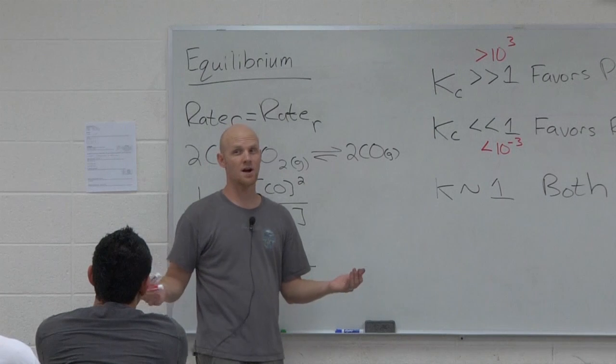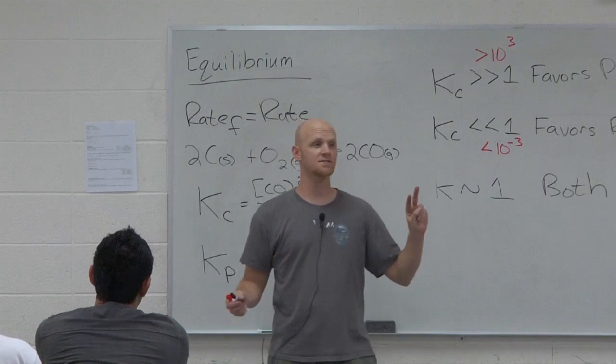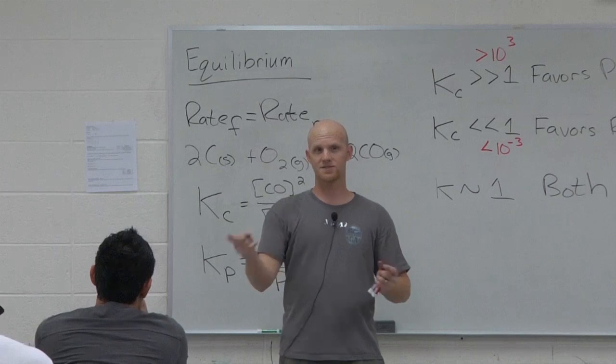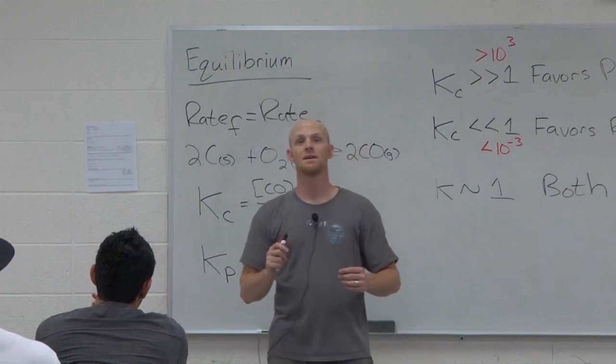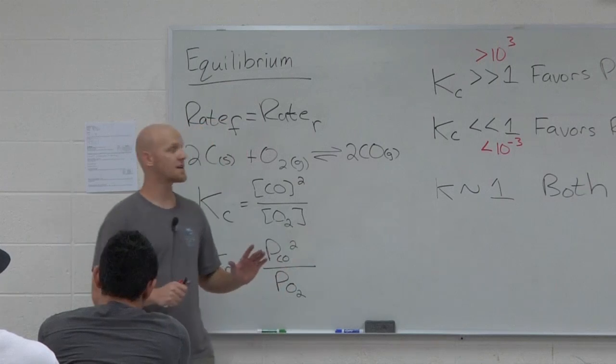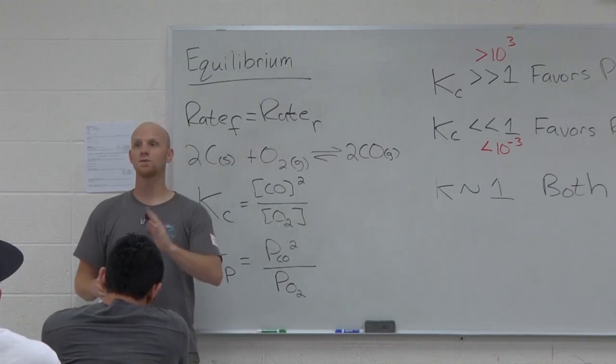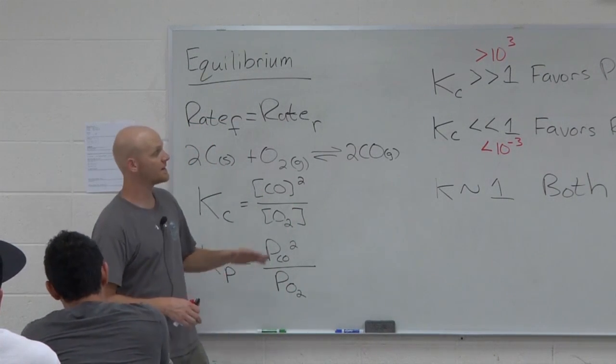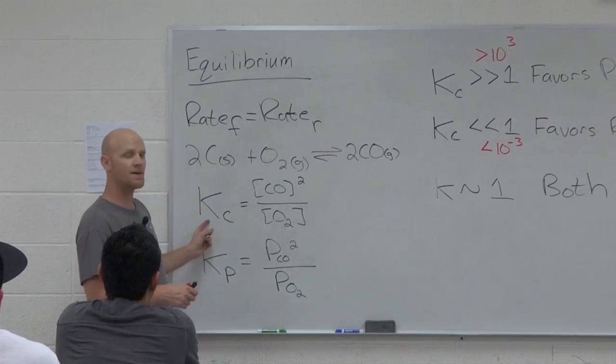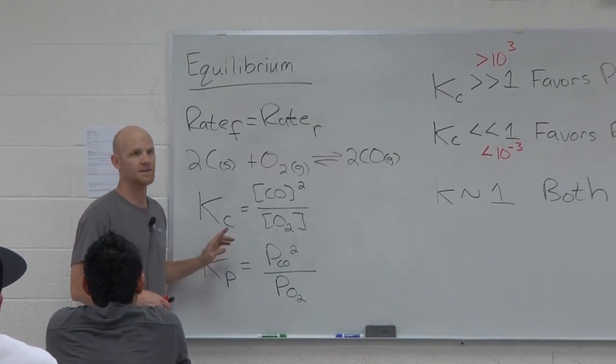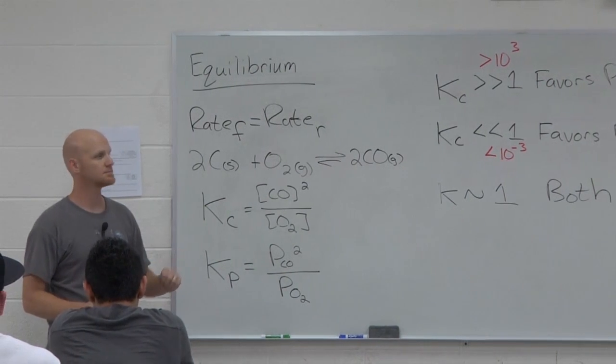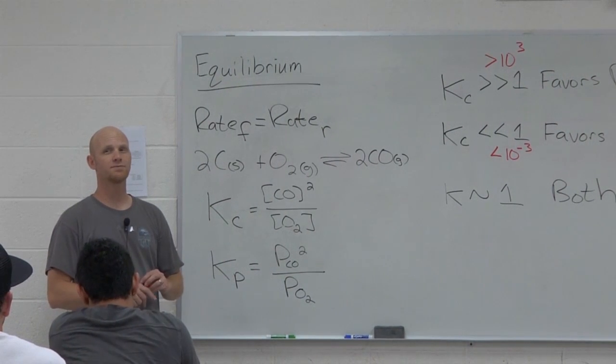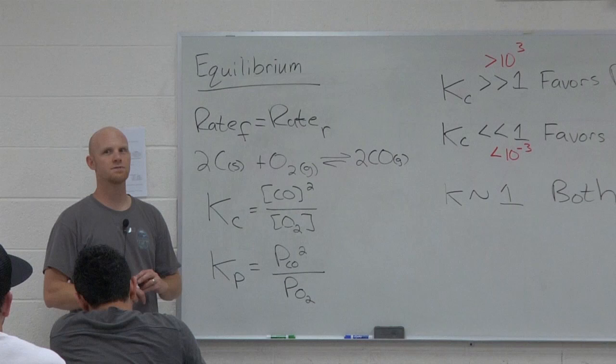The only thing that changes is temperature. Now notice this is different than the rate constant. What were the two things we could change that would change the rate constant? Activation energy and temperature. But notice, and how do you change the activation energy? By adding a catalyst. But if you recall, we said that a catalyst does not shift the equilibrium at all, which means that a catalyst does not change your K value at all. It does not shift the equilibrium. And so it's only temperature that can change this thing. That's it. Most of you guys will forget that before the next half hour is over.